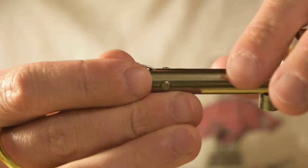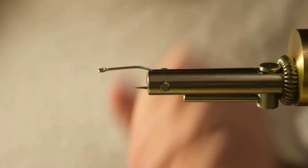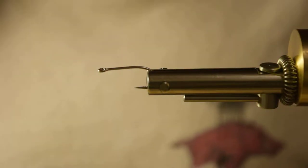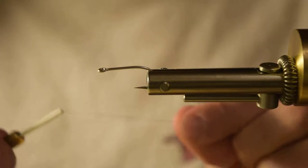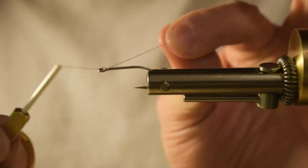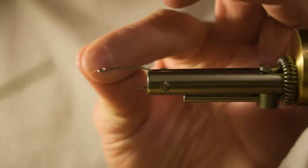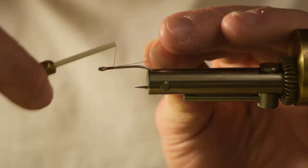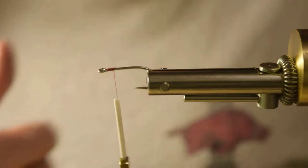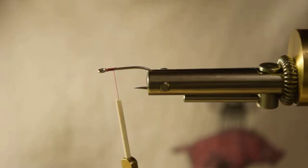What we'll be tying on today is an 811 saltwater hook by TMC in a size six, and we're going to get our thread started here. I'm just using a red 6-aught thread. You can use white, black, really whatever color you want to use.